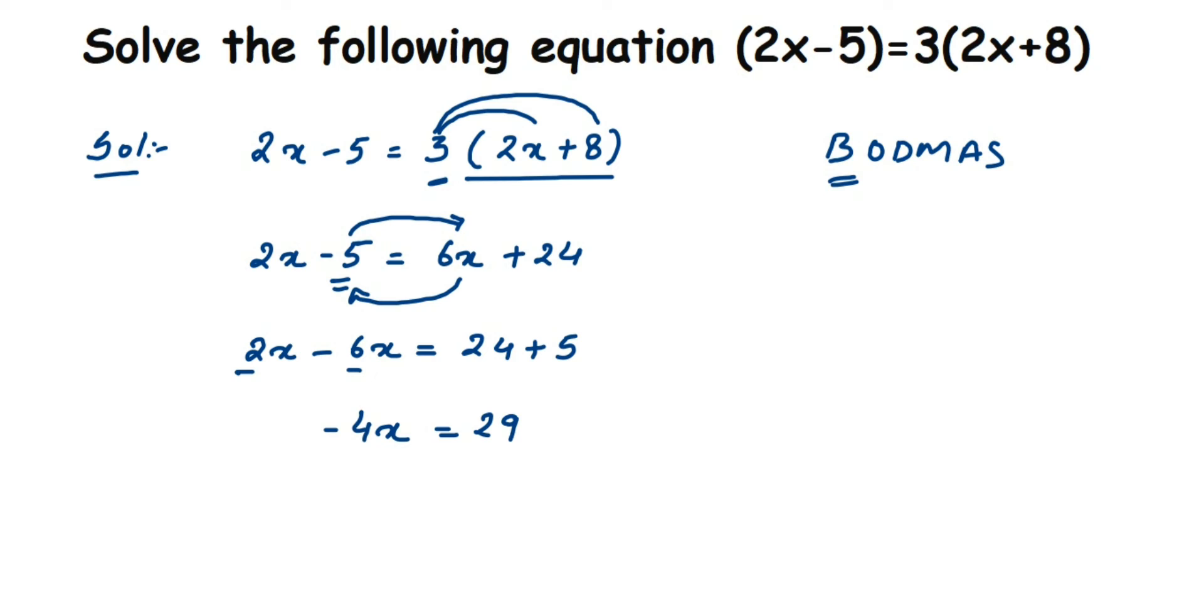Now here we have to find out only the value of x. We don't want this minus 4 here, so what we're going to do is transpose minus 4 to the other side of the equation. Minus 4 is in multiplication with x, so when transposed it comes in division.